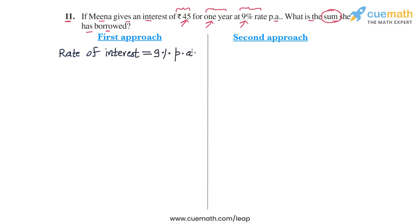And this means that on a principal amount of 100 rupees, the interest amount after one year will be how much? If the rate of interest is 9% per annum, the interest on rupees 100 will be rupees 9 per annum. So on 100 rupees, the interest will be rupees 9 per annum.